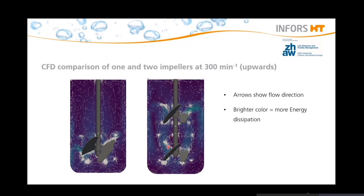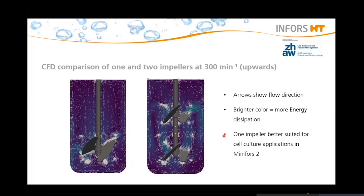From these simulations, we learned that one impeller causes less stress for the cells but still provides good mixing, as you can see in the distribution of the little arrows. Moreover, the maximum energy dissipation is lower with only one impeller compared to two, since we see less bright blue areas on the left picture compared to the right. This study showed us how important it is to design the impeller optimally, and it was a great support to evaluate the stirrer configurations for the Miniforce 2 cell.